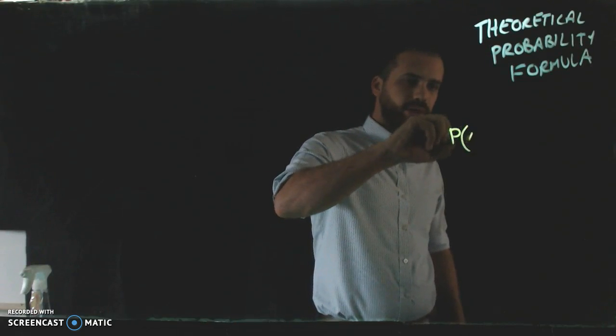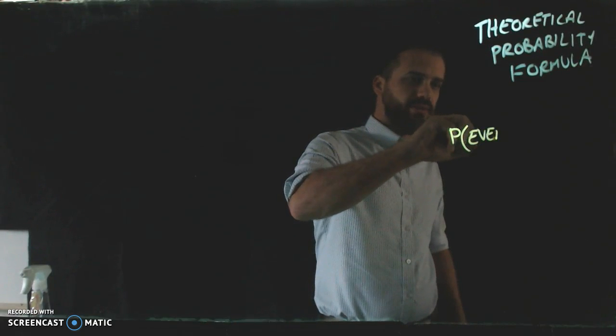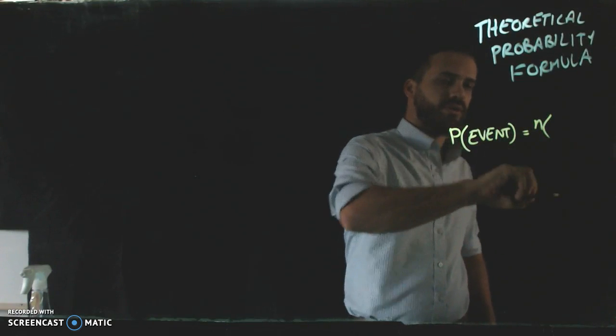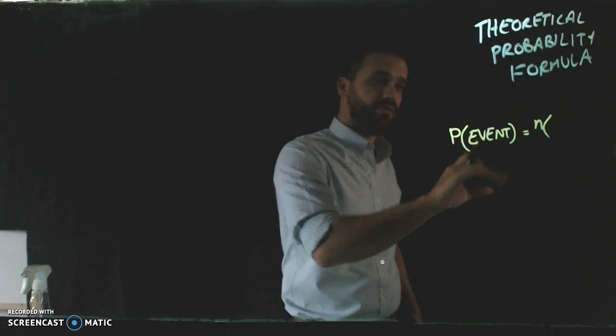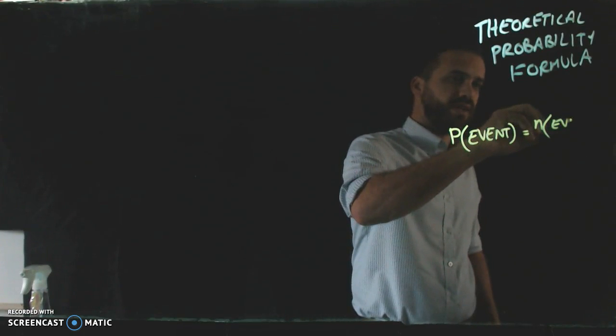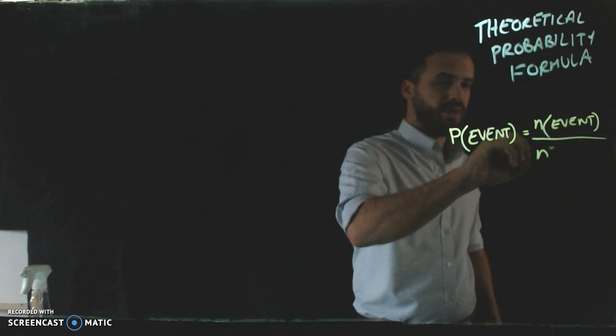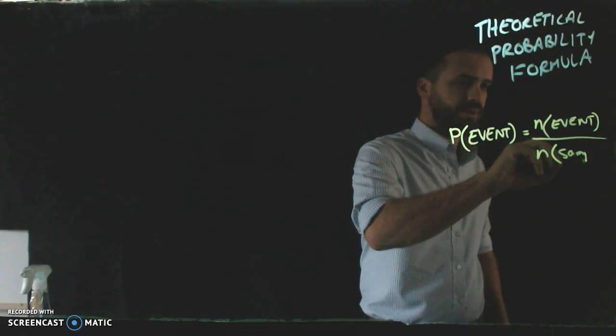Now, it says that the probability of some event happening is equal to the number of different ways - n for number - the number of different ways that event can happen, divided by n, the number of the sample space.